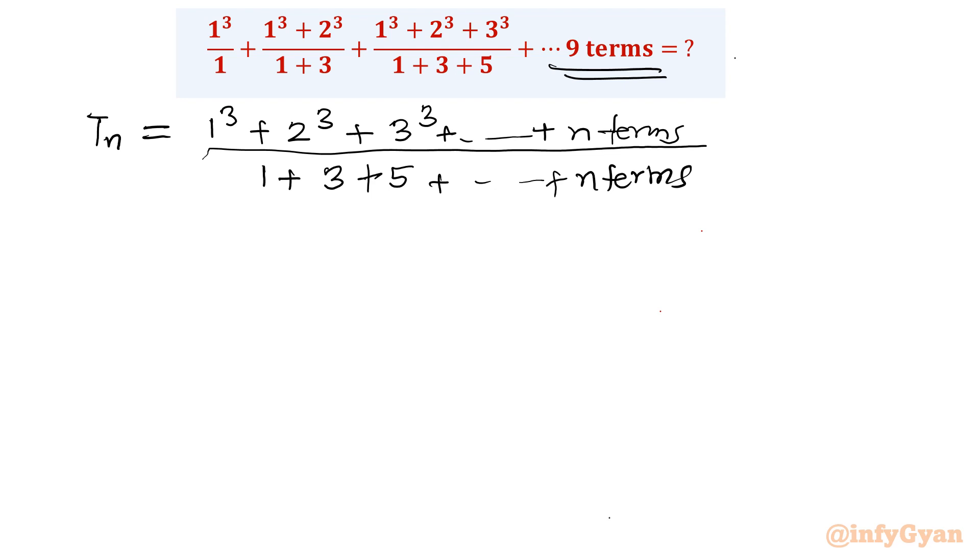Then we will apply the condition for 9 terms. So now we know from the result of sum and sequence chapter, what would be the value of 1 cubed plus 2 cubed plus 3 cubed up to n cubed, the sum of cubes formula. That formula is n times n plus 1 over 2 whole square. This is what we know.